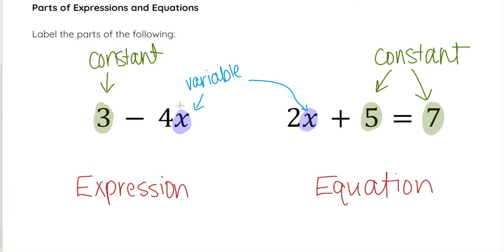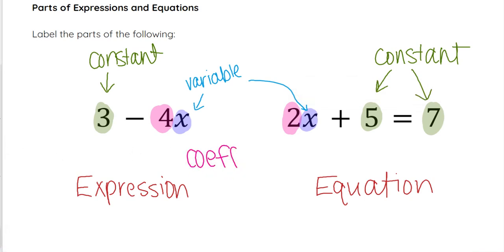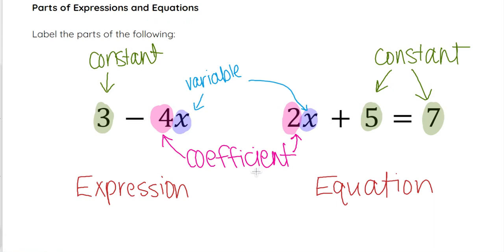Looking at the 4 — or negative 4 — here and the 2 here, those are what we call coefficients. A coefficient is basically a constant but attached to a variable, being multiplied by that variable. So negative 4 is a coefficient on x, and 2 is a coefficient on x, because it's what's being multiplied by the variable.